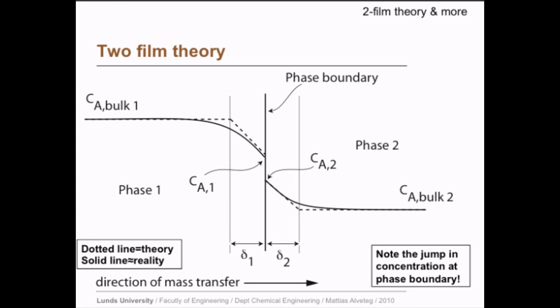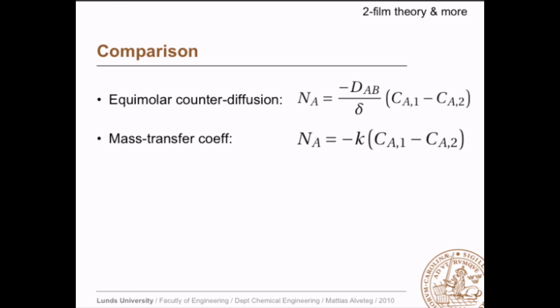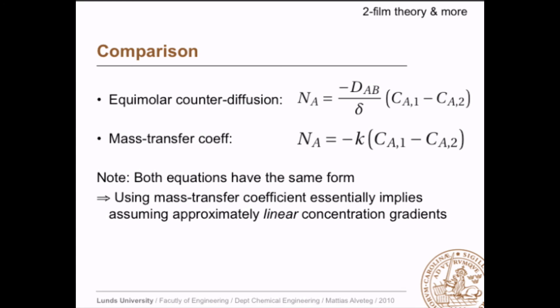When do you use two-film theory? For example, in distillation of ethanol and water with no heat loss, we have equimolar counter diffusion because ethanol and water have essentially the same heat of evaporation and negligible mixing enthalpy — so one mole of gas condensing exactly evaporates one mole of liquid, giving linear concentration gradients. Comparing the equimolar counter diffusion equation with the mass transfer coefficient equation, both have the same form — meaning that using a mass transfer coefficient implicitly assumes a linear concentration gradient.